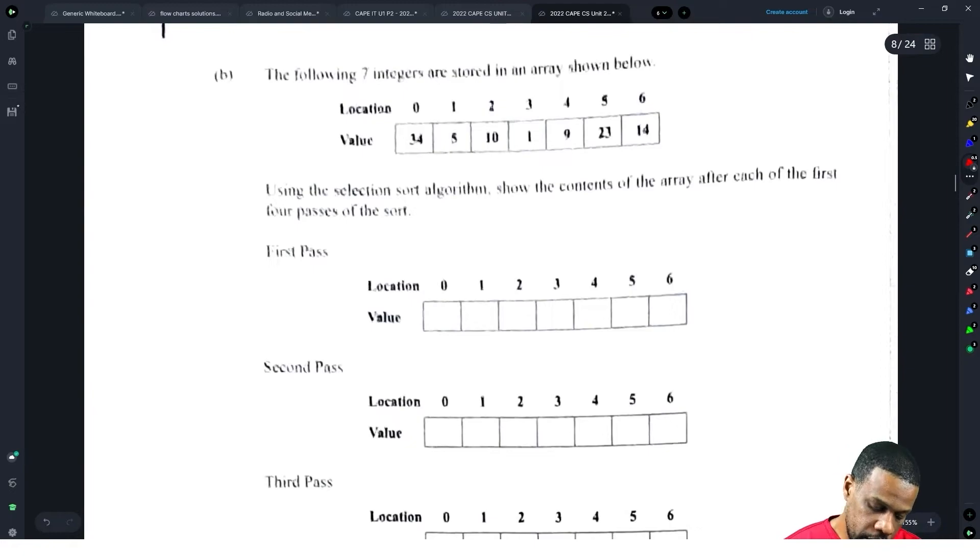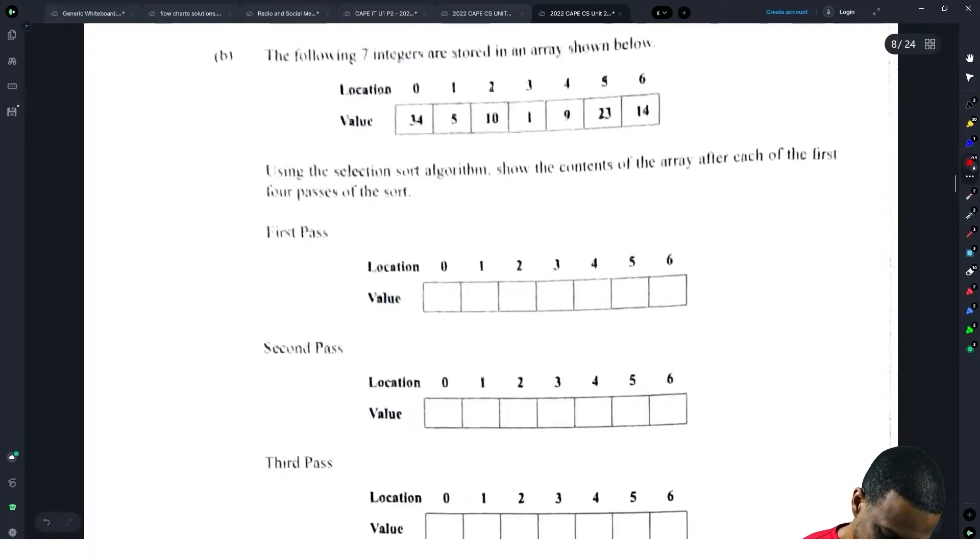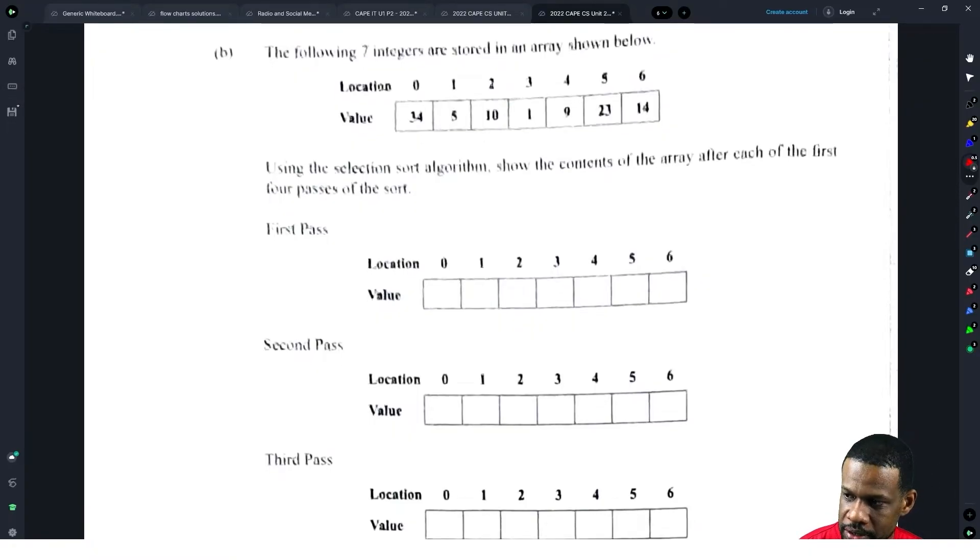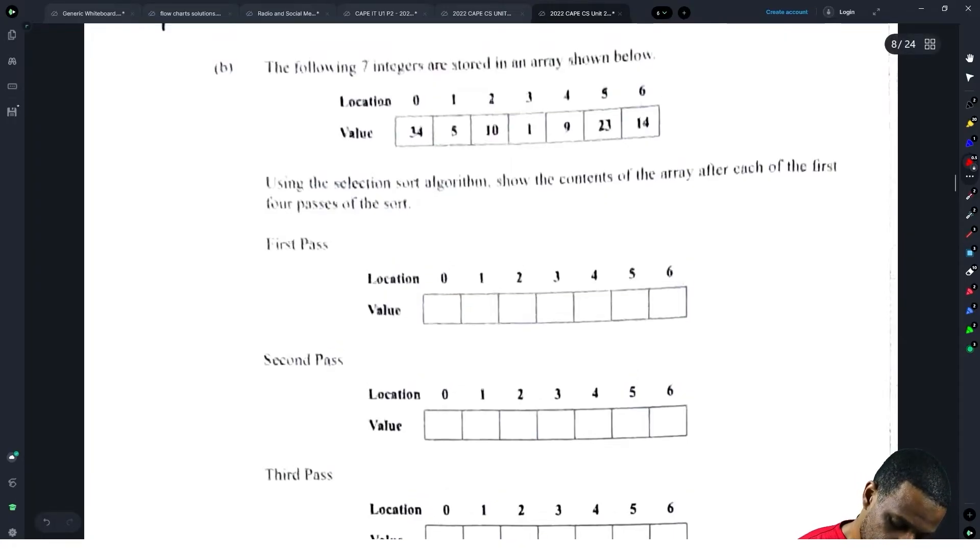The following seven integers are stored in an array as shown below. Wow, this black market version of the exam paper, it's cringy. Like whoever used their phone to scan this one, they didn't really use it.